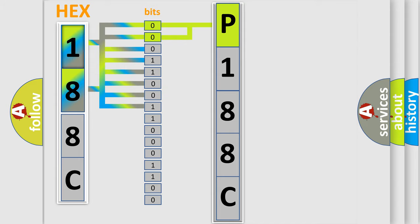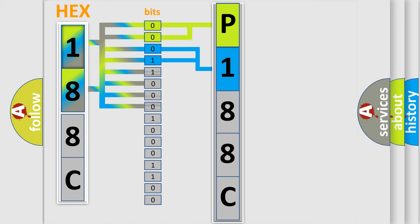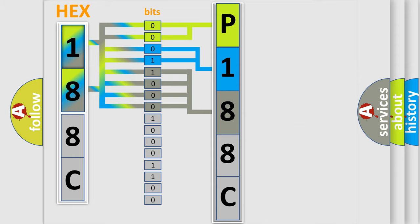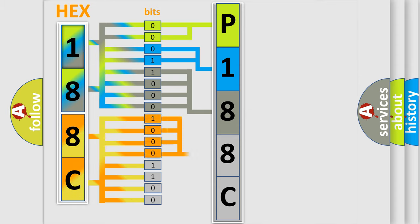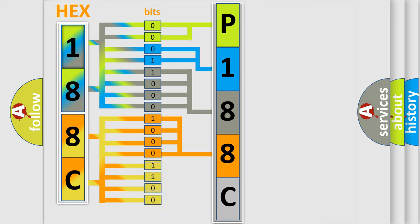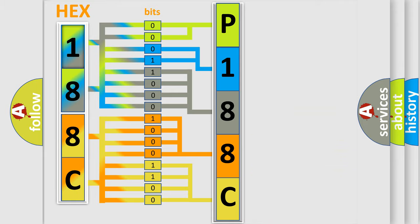The next two bits determine the second character. The last bits of the first byte define the third character of the code. The second byte is composed of a combination of eight bits. The first four bits determine the fourth character of the code, and the combination of the last four bits defines the fifth character. A single byte conceals 256 possible combinations.